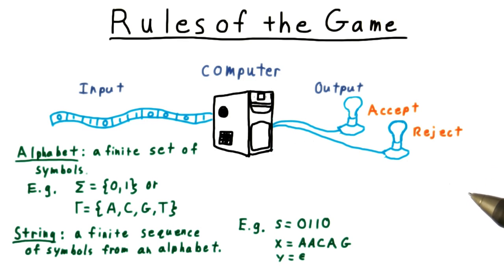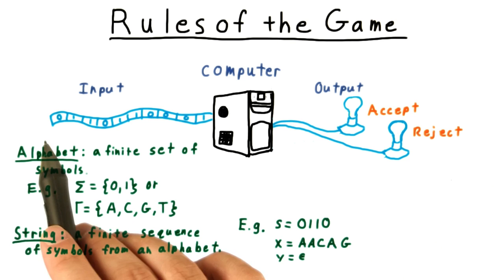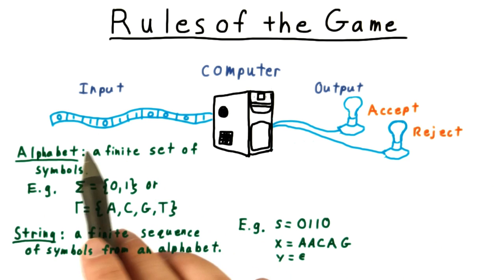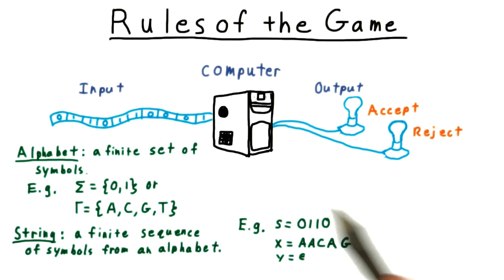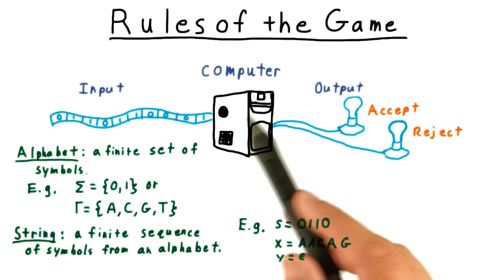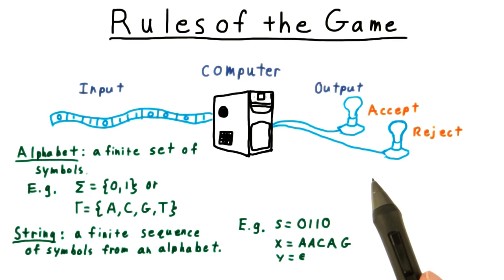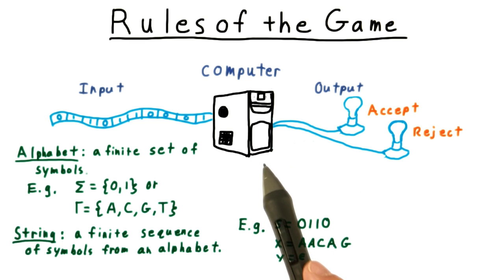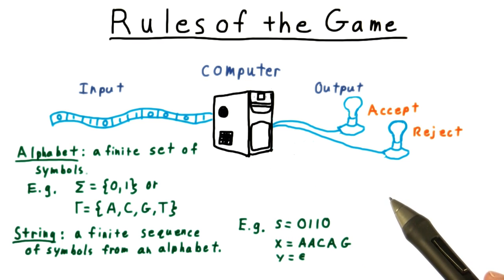In the last lesson, we began to define what computation is, with the goal of eventually being precise about what it can and cannot do. We said that the input to any computation can be expressed as a string, and we assumed that whatever the instructions were for turning input into output, that these too could be expressed as a string. Using a counting argument, we were able to show that there were some functions that were not computable.